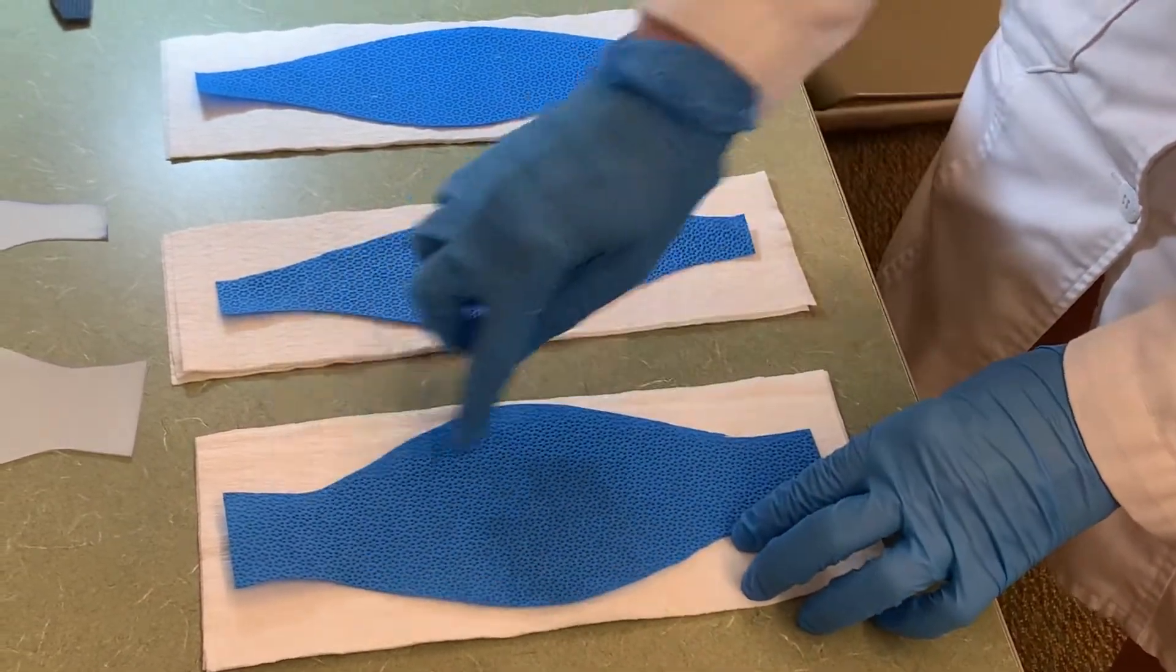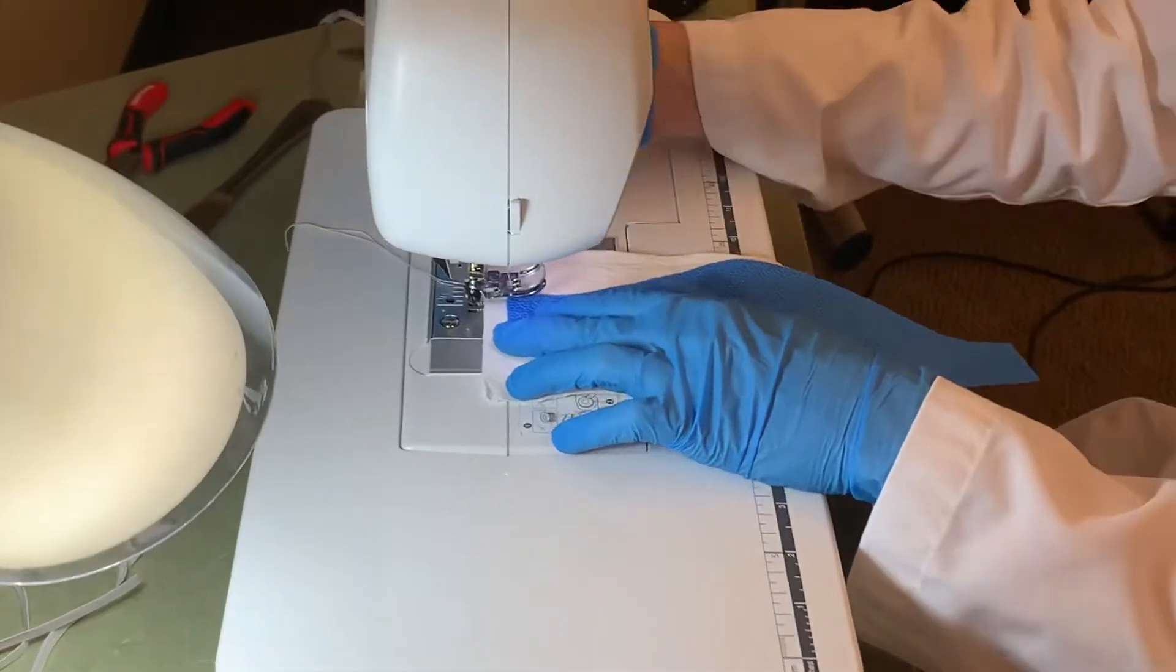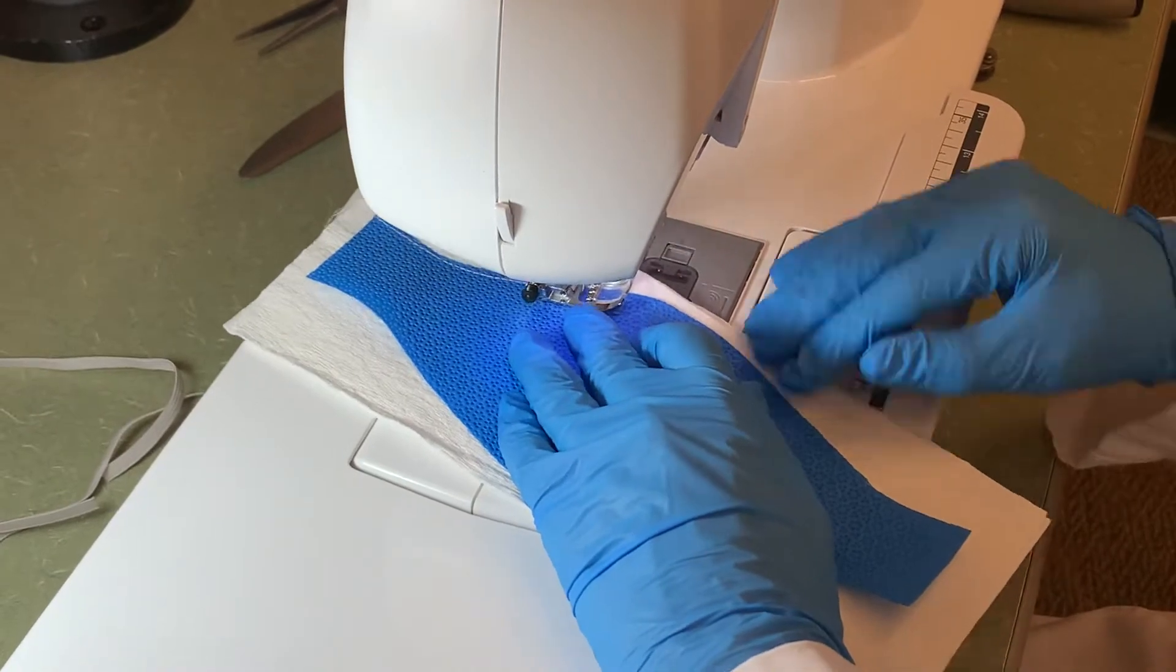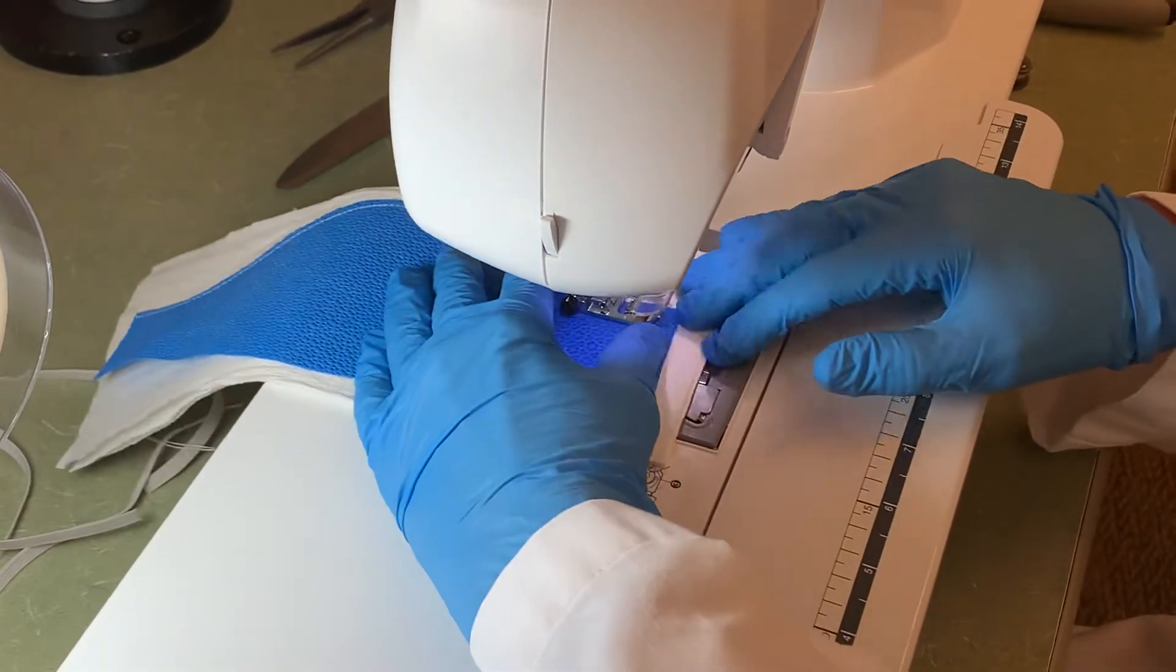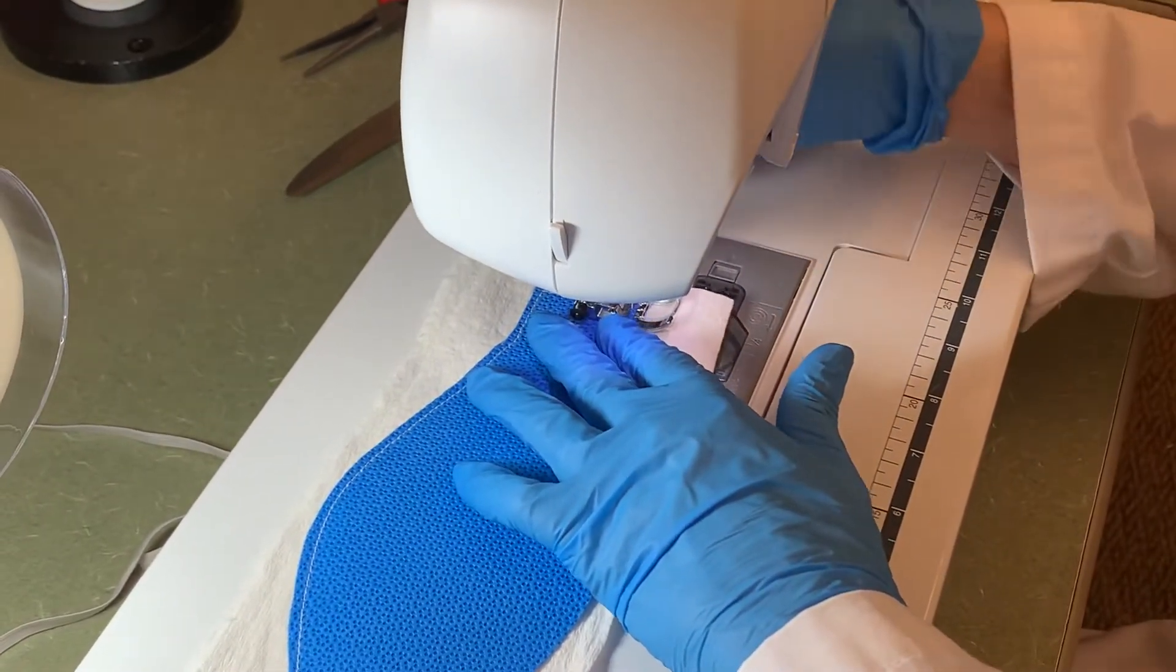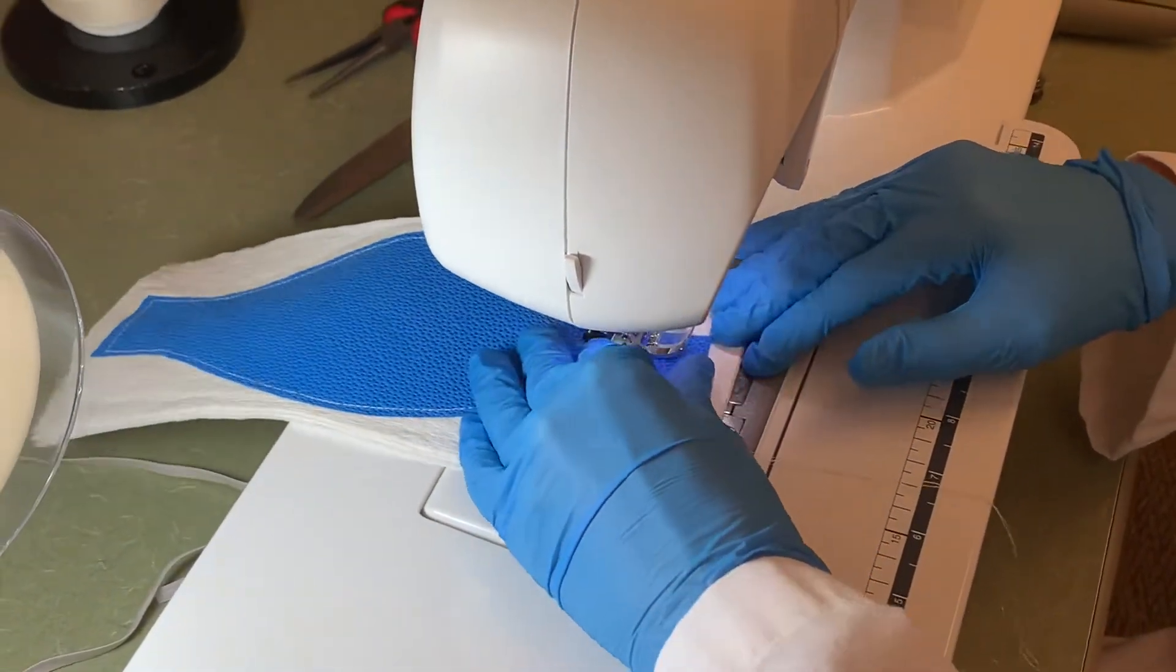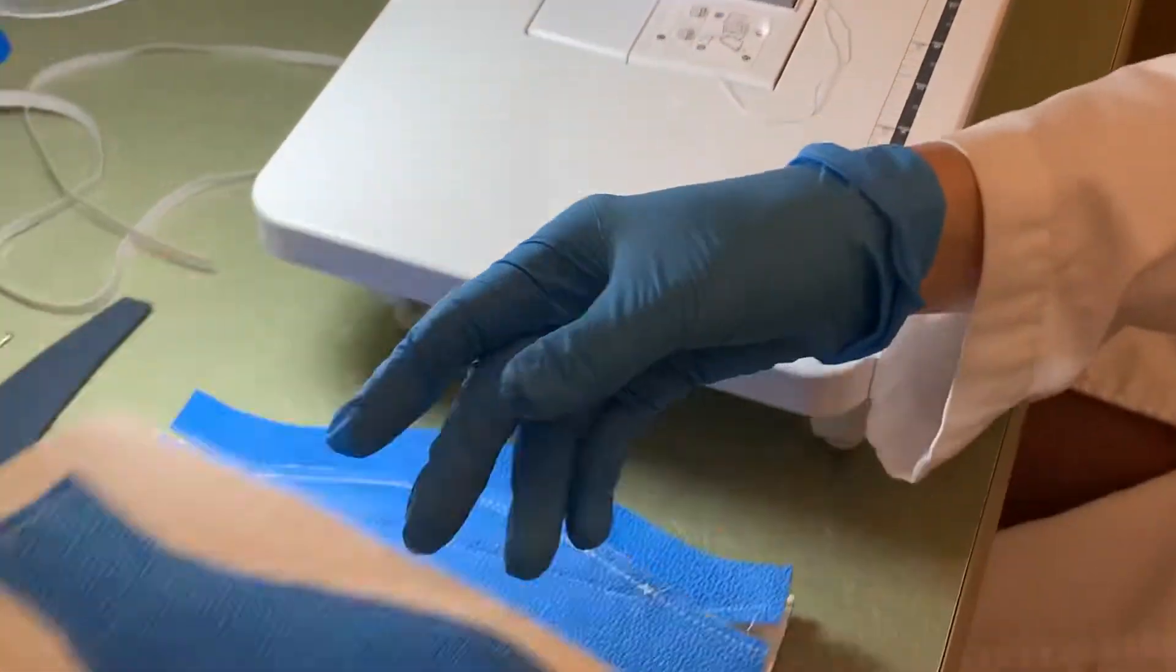The first thing to do is to sew around these. So we take this one, bring it to the sewing machine and we're going to stitch around the edges. Rotate and rotate again. And there's no need to backstitch because you're going to be stitching across that. That's how you do that piece.